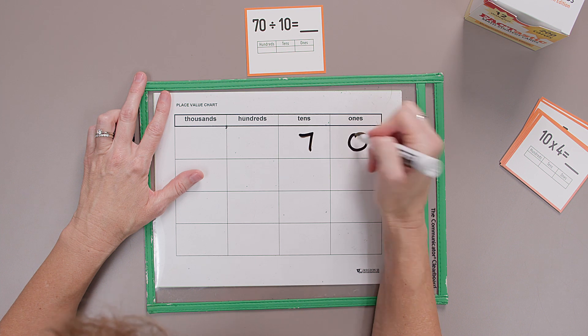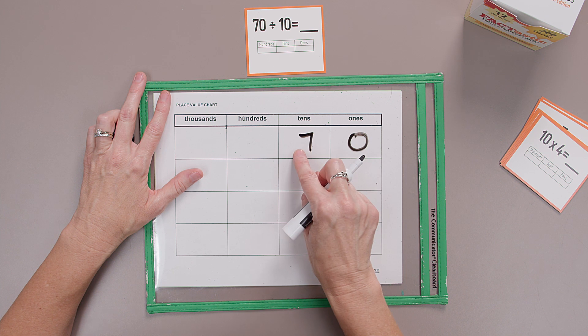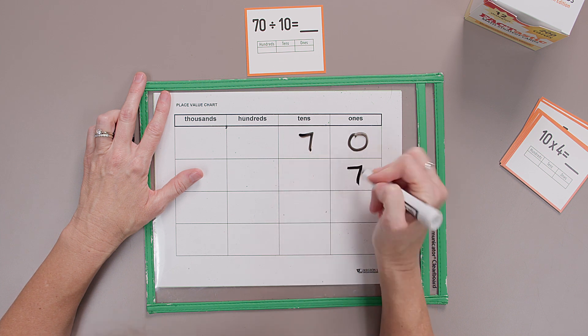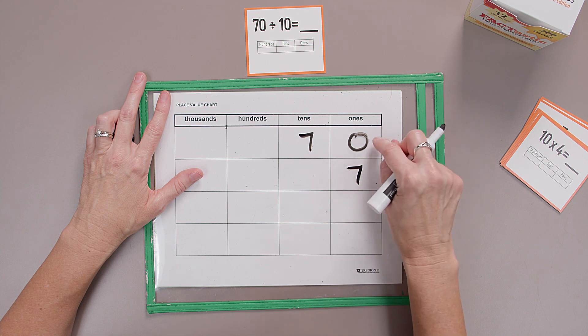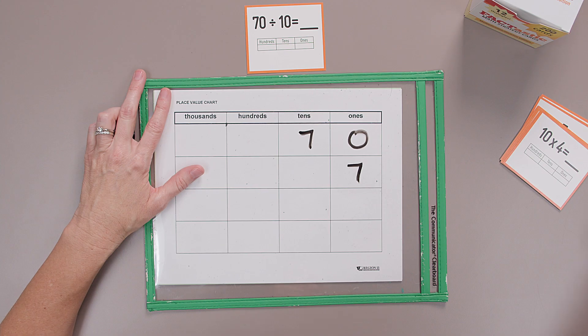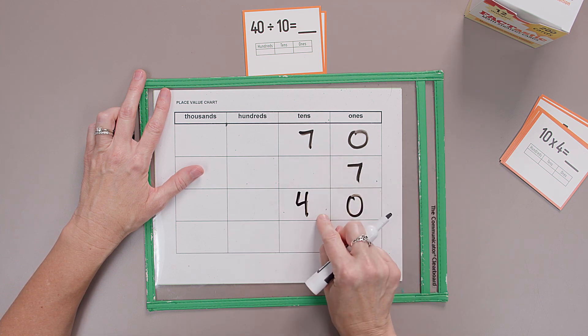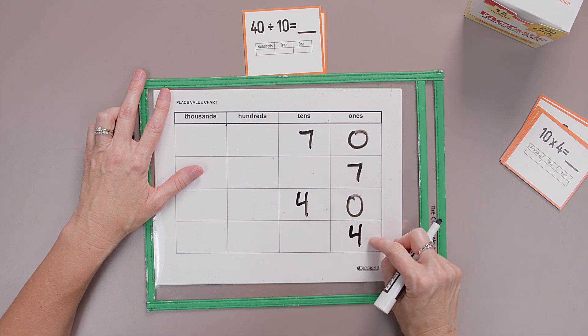Can we think about division? What would happen when we divide by 10? Let's start with 70. 70 divided by 10 — well, when I multiply, the digit moves to the tens place; when I divide, that 7 goes back to the ones place. 70 divided by 10 is 7. That 7 just moves back to the ones place. How about 40 divided by 10? 40 divided by 10 is 4. Excellent.